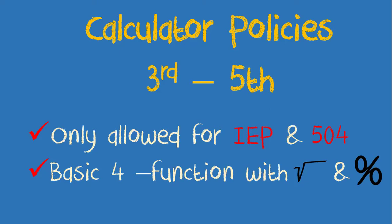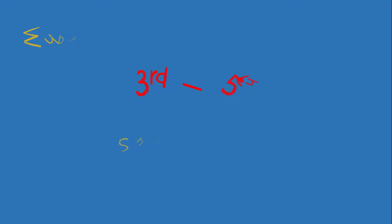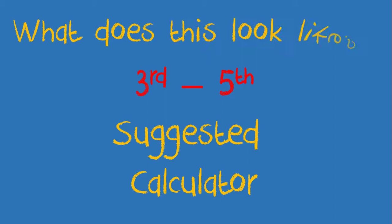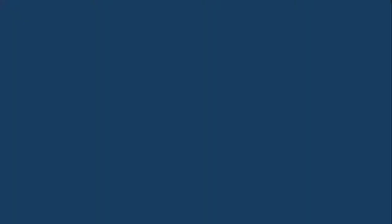The plus or minus button looks like this. This is the calculator your Epic math coaches suggest for your third through fifth graders on an IEP or 504 with a calculator accommodation. All sixth and seventh graders will be allowed a calculator on the state test. This calculator is the same suggested calculator for the third through fifth — it must only be a four function but allowed to have a square root and percent button, but again no plus or minus button.